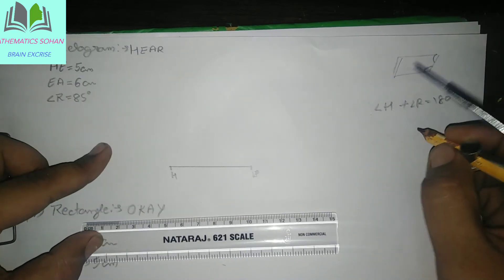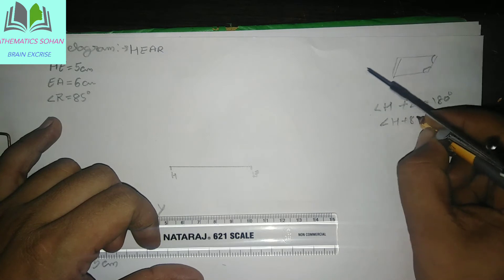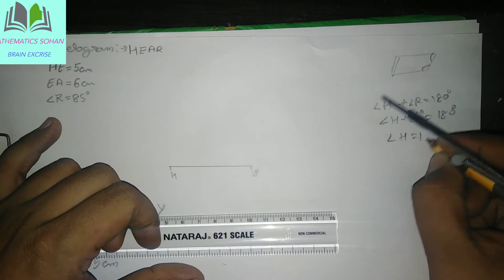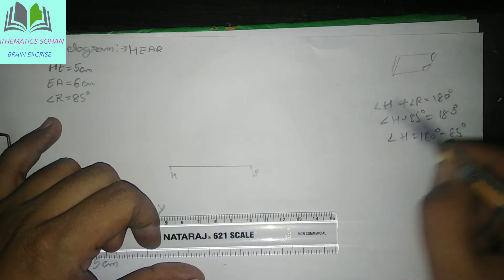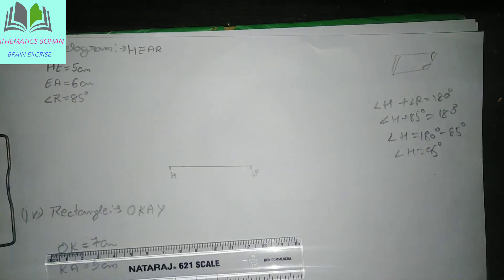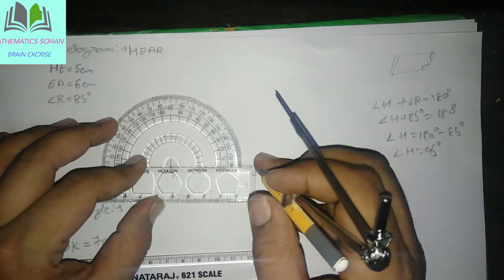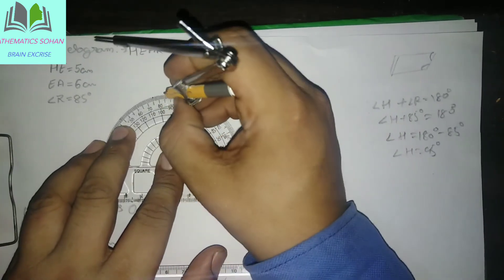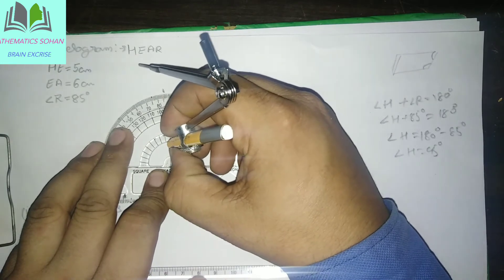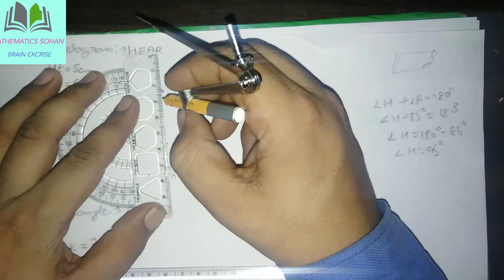Aur angle R ki value itni rakhi hai hamare paas: 85. Angle H plus 85 degree is equal to 180 degree — angle H ki value aa jayegi hamare 180 degree minus 85 degree — angle H ho jayega hamar 95 degree. Toh yahan pe kya karte hain — H ke upar 95 degree ka angle bana lete hain. Yeh 95 degree ka angle hum yahan pe construct kar lete hain. Isi side se hamare 95 degree ka aayega.